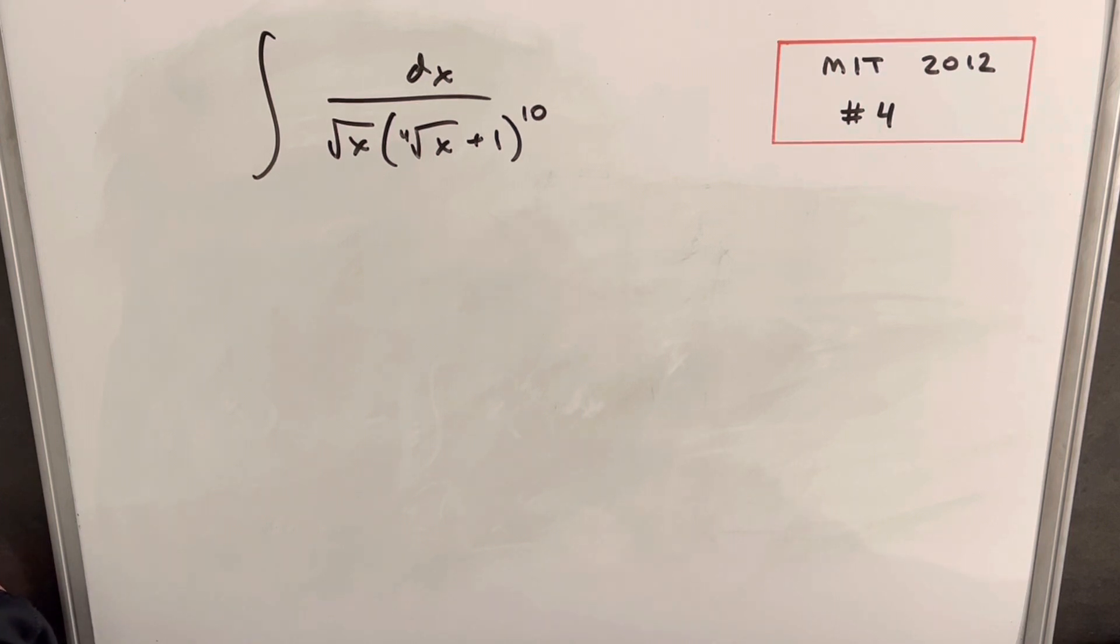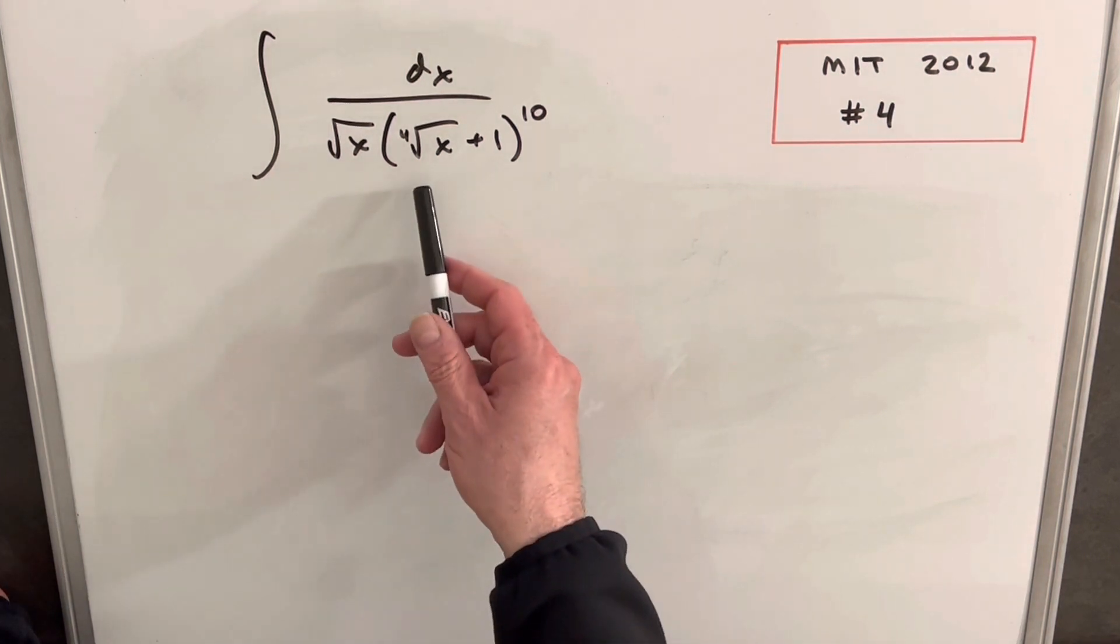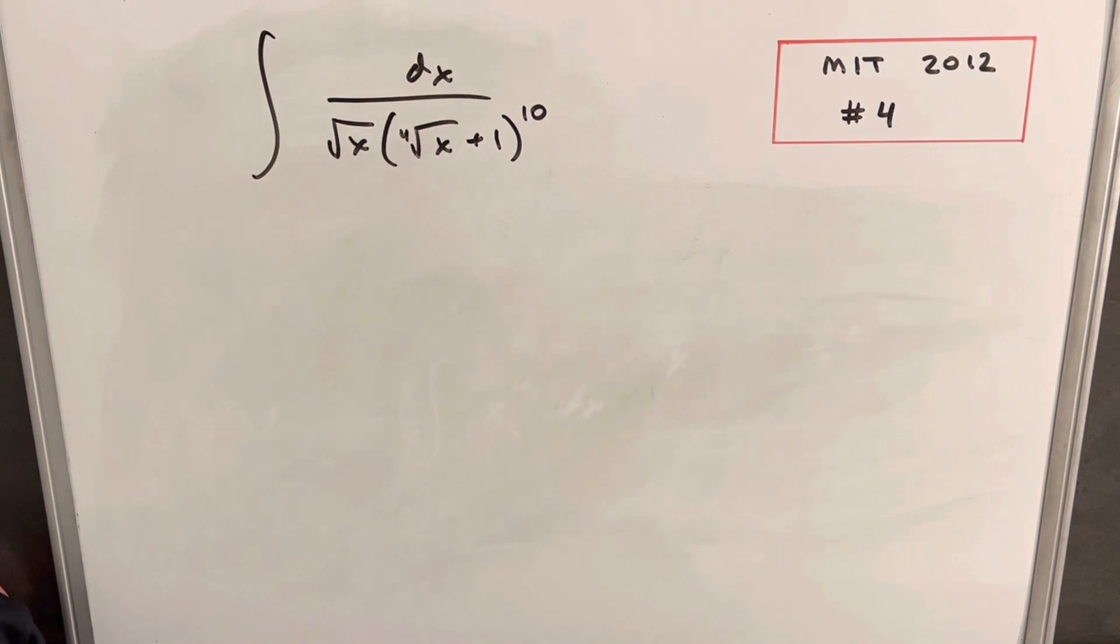Okay, and the reason this looks so tricky is we have quite a few problems here. We have this fourth root in this expression, and we have a tenth power. So there are a few things that are going to make this a little difficult for us.